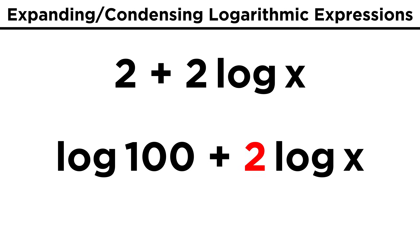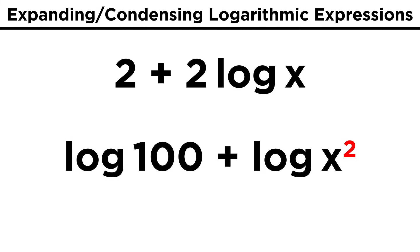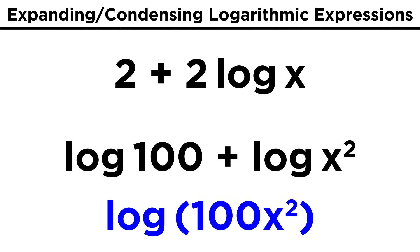Now just the way we can bring an exponent to the front, we can push a coefficient up over this term, so two log X can be log X squared. And now we have a sum of logs with the same base, so we can combine them to get a product. And log one hundred X squared is what we get.